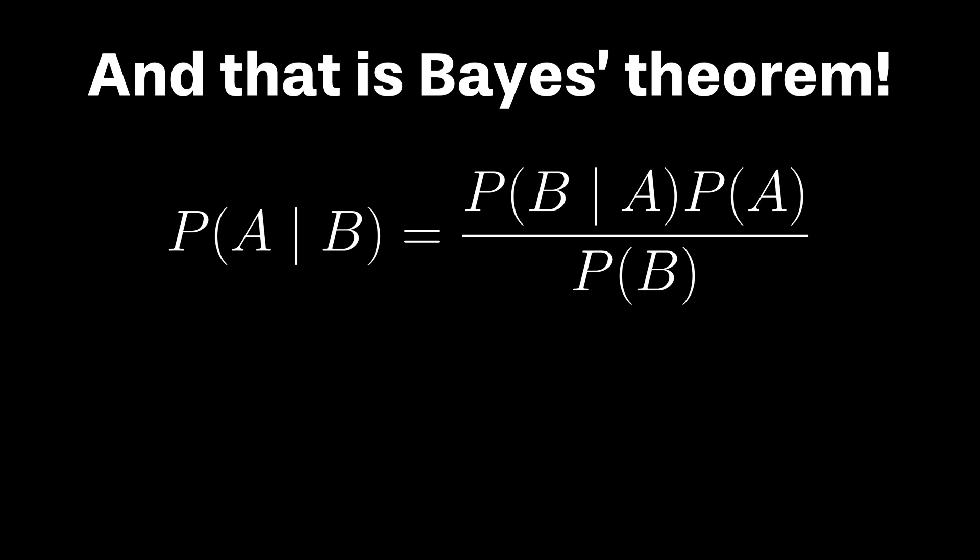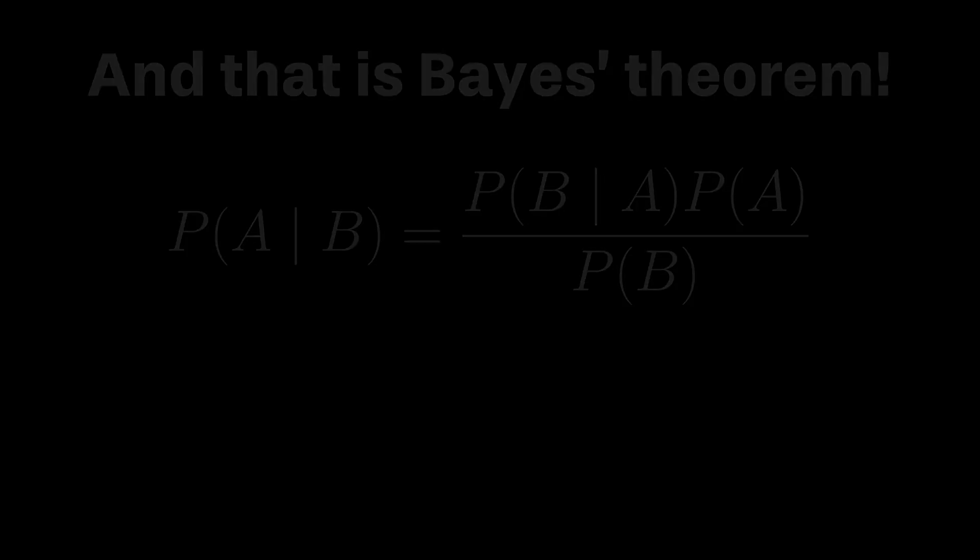Well, that was a mouthful, but hopefully it makes sense. A very natural question is: why would you make your original equation larger and seemingly more complex? There are multiple good reasons, one of which is that this formula allows us to easily update our probabilities with new information.